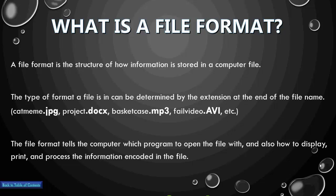A file format extension can be found at the end of the file name on any file on your computer. For example, catmeme.jpg — the .jpg is your file format, which is an image file. There's project.docx, which would be a Word file. That extension tells the computer to open a .jpg with a picture viewer, a .docx with Word, an .mp3 with a music player, a .avi with a video player, etc.